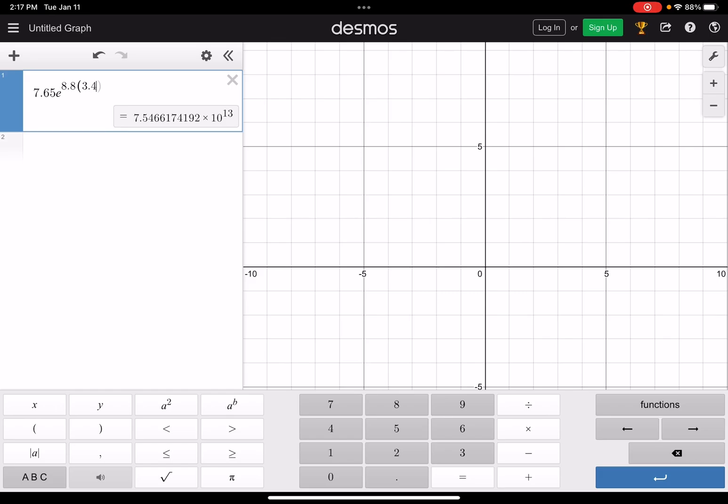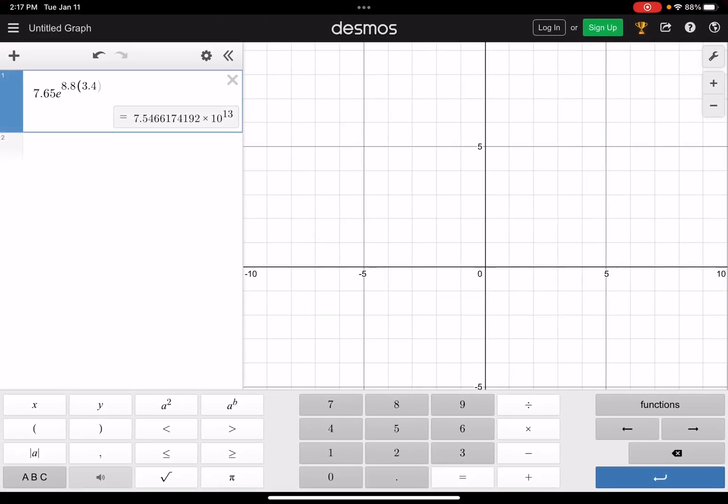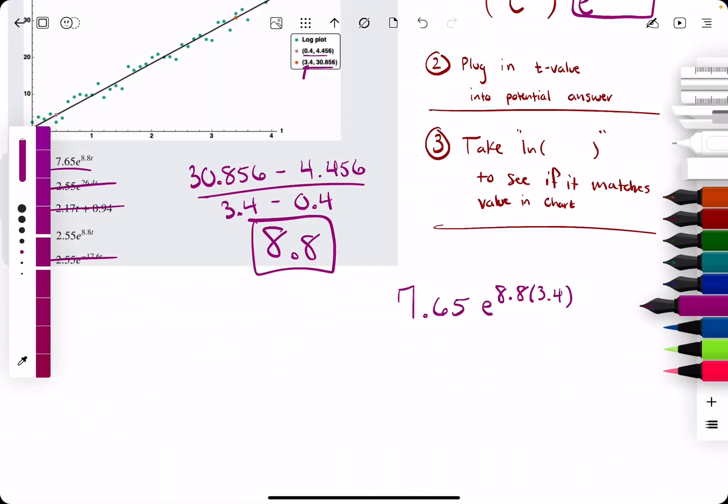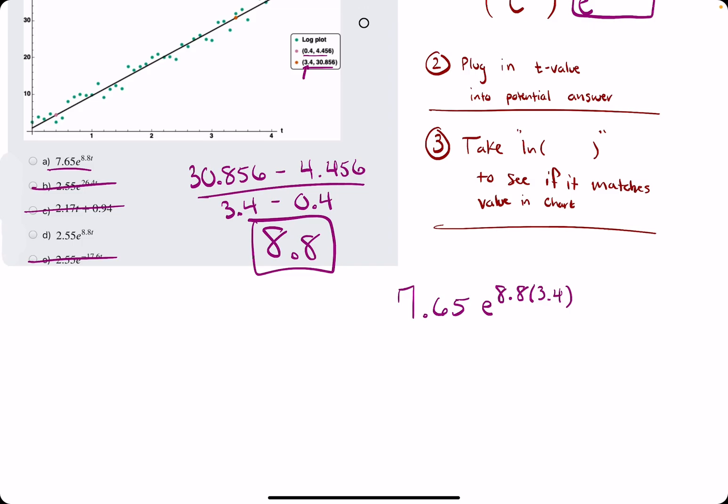All right, so that gives us a giant number, if I've done that right. 7.65, yep, e to the 8.8, giant number. Okay, so let's not lose track of what we're doing. So we get a giant number for that, so I'll just kind of leave that in Desmos.